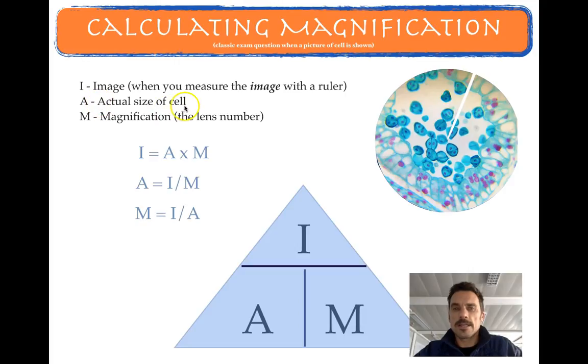The A is the actual size of the cell in real life. So these are usually in micrometers. They're tiny, tiny, tiny. So remember that unit for this one in particular, micrometers. The M is the magnification of the lenses that you're using to get that close.